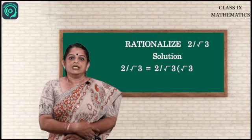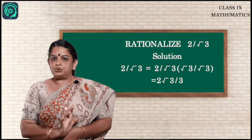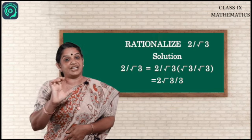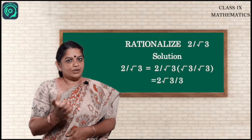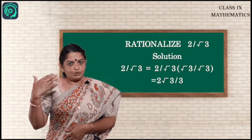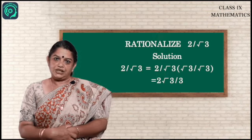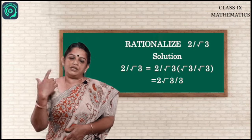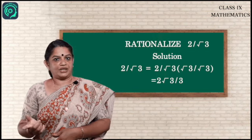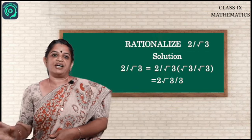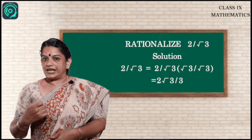For example, rationalize 2/√3. The denominator is √3, so multiply numerator and denominator by √3: we get 2√3 / (√3 × √3) = 2√3 / 3. Now the denominator is 3, which is a rational number.